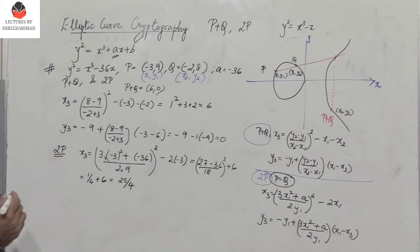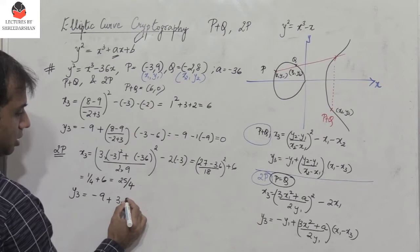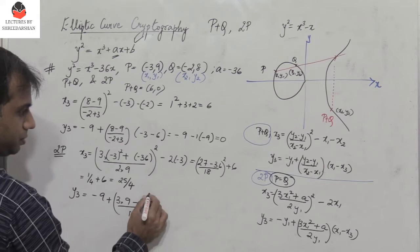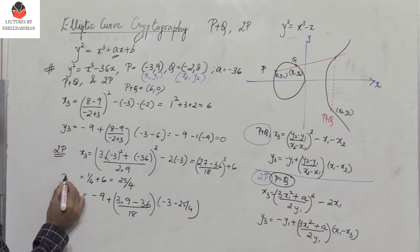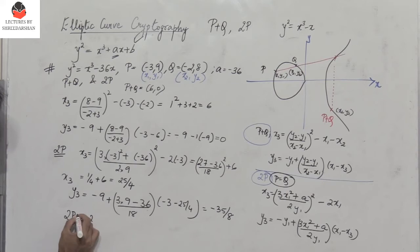To calculate y3: minus y1 is minus 9, plus ((3 times (minus 3) squared plus (minus 36)) divided by (2 times 9)) into (x1 minus x3). That is minus 9 plus ((27 minus 36) divided by 18) into (minus 3 minus 25 over 4). Doing the calculations gives y3 equals minus 35 over 8. So the coordinates of 2P are (25/4, minus 35/8). This was straightforward as we just had to substitute into the formulas.